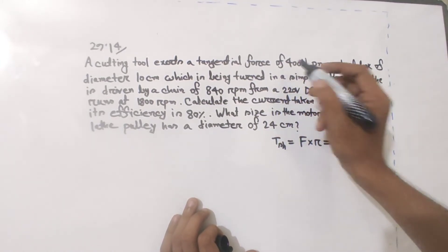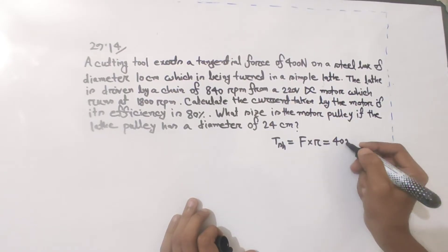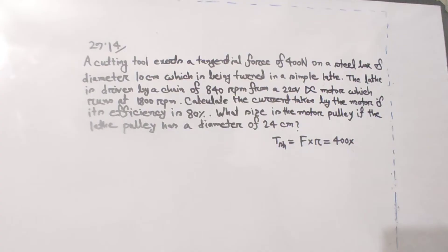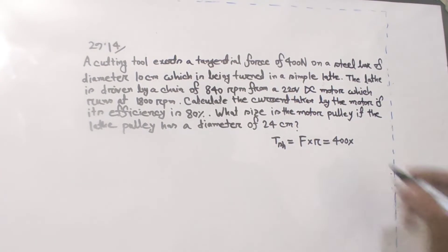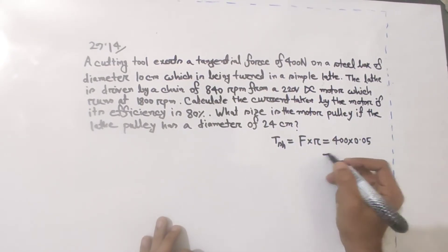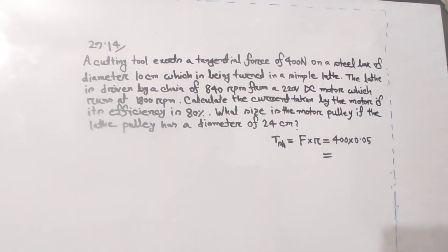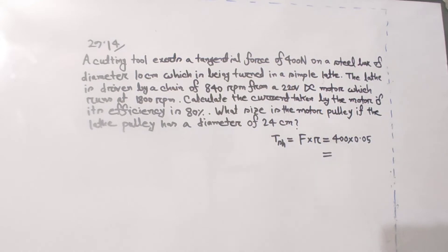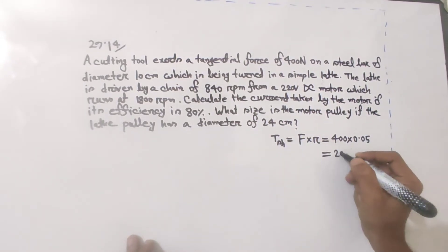With 400 newton and diameter of 10 centimeter — that is 0.1 meter — the radius is 0.05 meter. So torque equals 400 into 0.05, which gives 20 newton meter. The output torque is 20 newton meter.